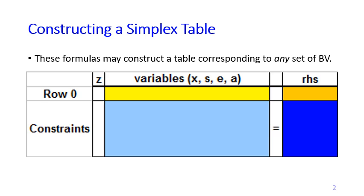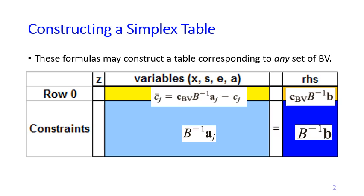First, let us recall the formulas we used in sensitivity analysis to construct the optimal table. These formulas may actually be used to construct any simplex table, as long as we know the set of basic variables for that simplex table. So not only the optimal table, but every step in the simplex iteration can be constructed using these formulas — both for row zero and the constraint rows.